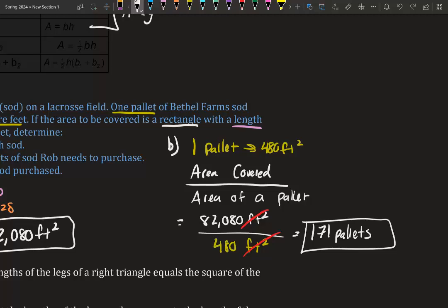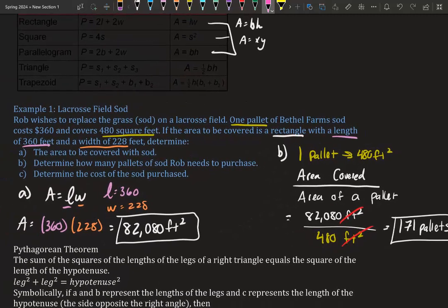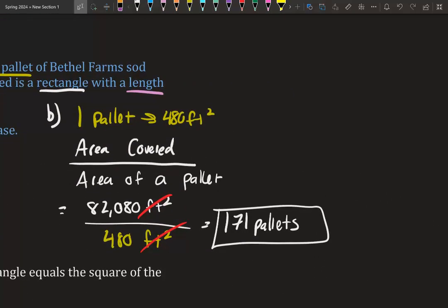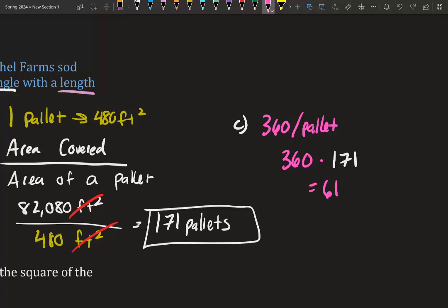If we need 171 pallets and one pallet costs $360, we multiply those two numbers together. So 360 times 171 gives us a total cost of $61,560 to re-sod this field.